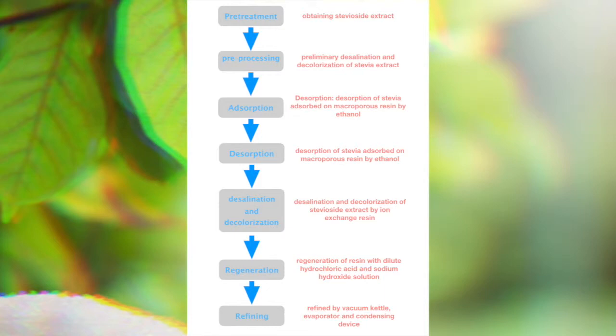Step 2: Pre-treatment. Preliminary desalination and decolorization of stevia extract. The function of this process is to desalinate, decolorize, and remove some impurities of the stevicide liquid from the previous process.